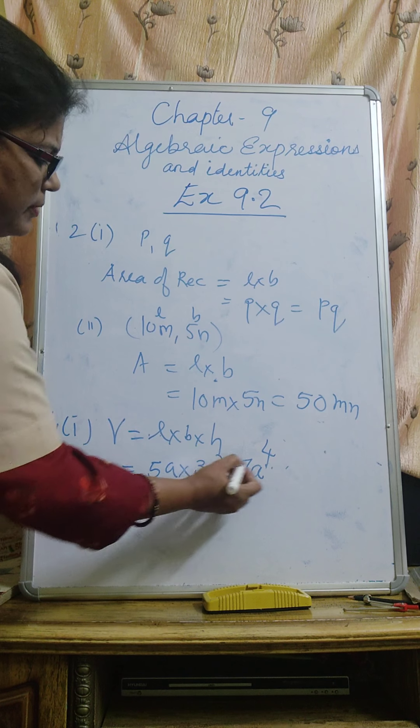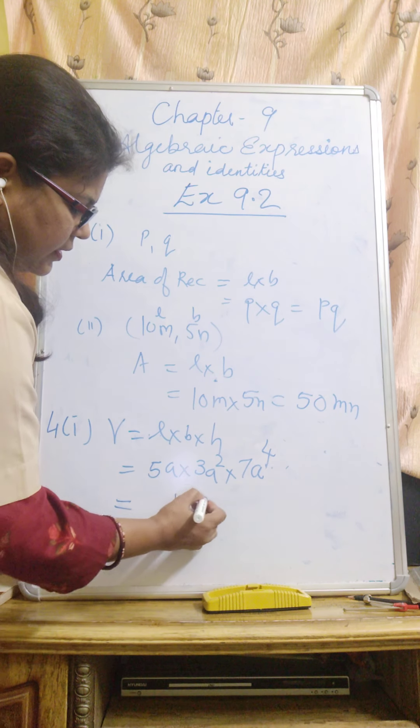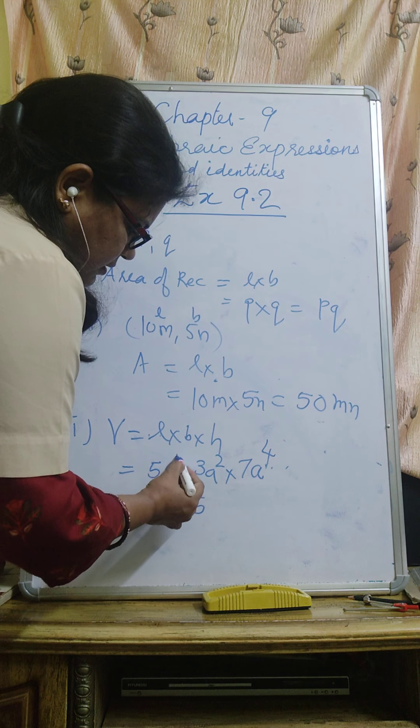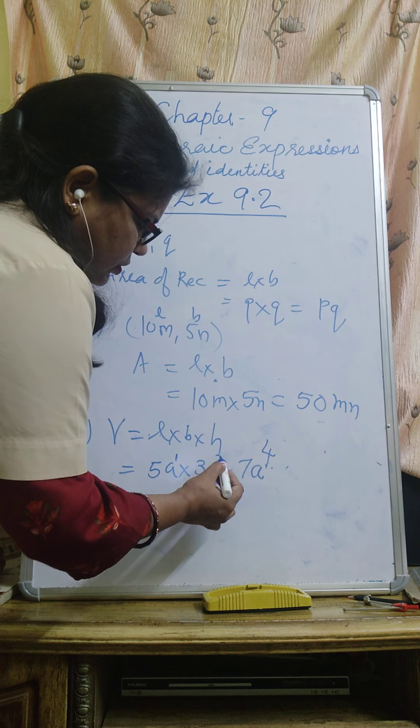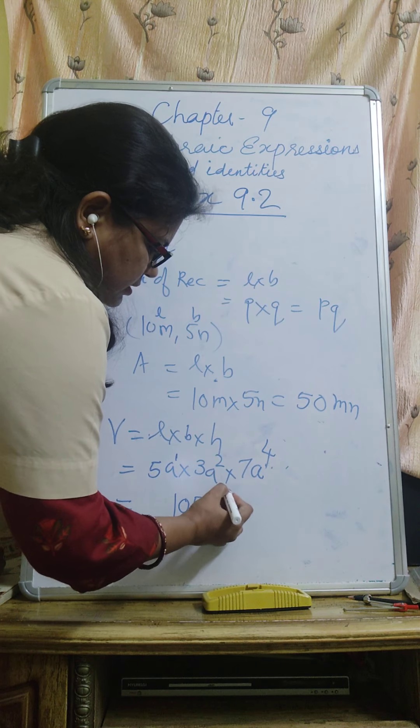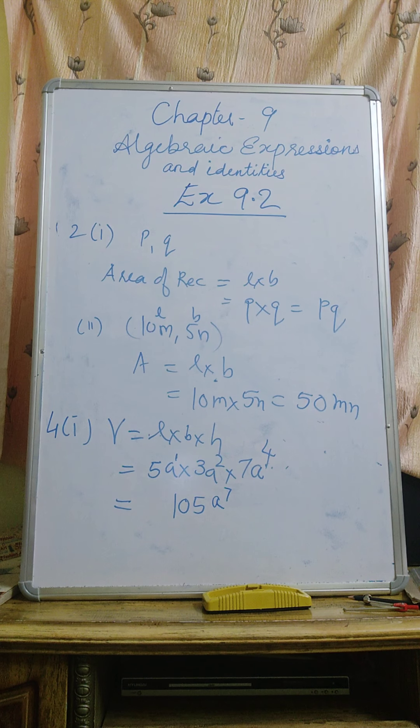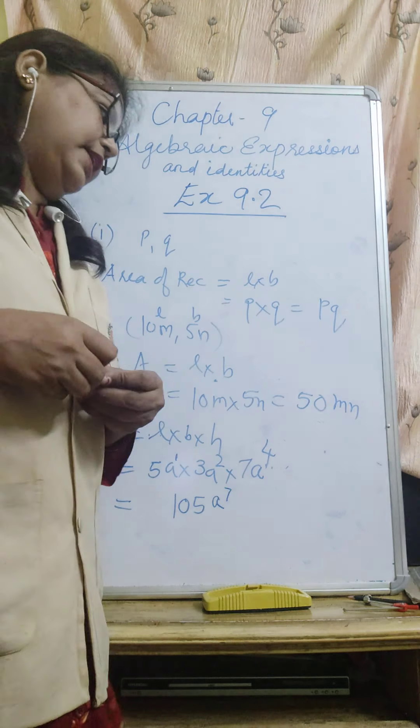5A into 3A square into 7A to the power 4. 5 times 3 is 15, 15 times 7 is 105. Now count the powers of A. This is 1, 1 plus 2 is 3, 3 plus 4 is 7, so A to the power 7. The answer is 105A to the power 7. This is called the volume. Three things are given: L, B, and H.